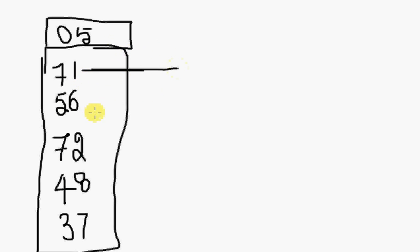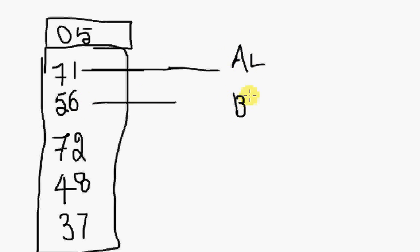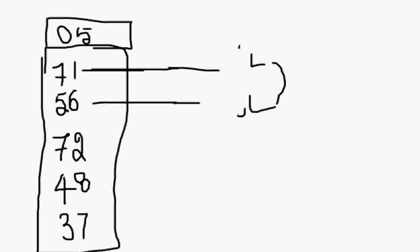What you're going to do is compare this data and that data. In order to compare, bring the data into the processor — store one value in register AL and the other, say 56, in BL. Since it's 8-bit data, we use 8-bit registers. The two data from memory come into the processor, stored in AL and BL respectively, then we compare them and write the result back to memory.